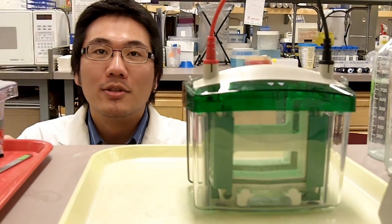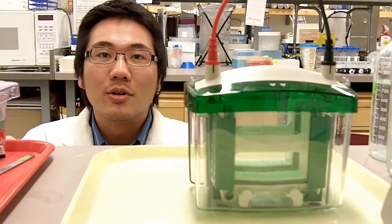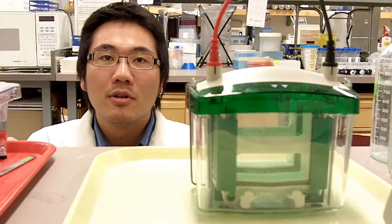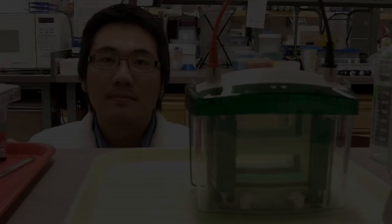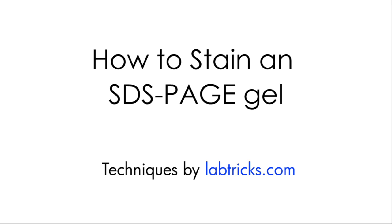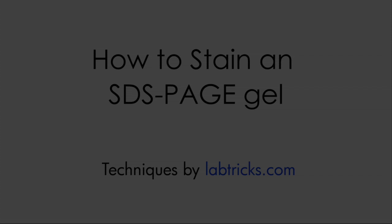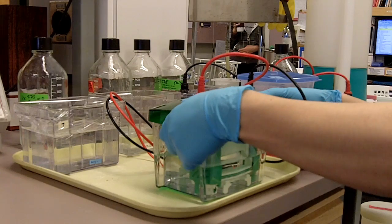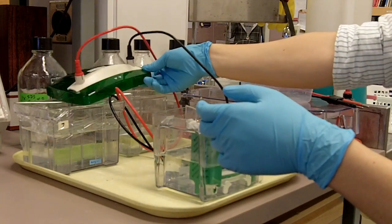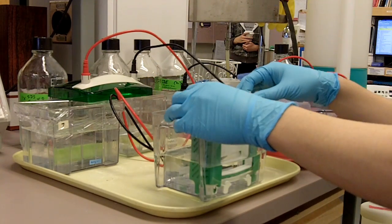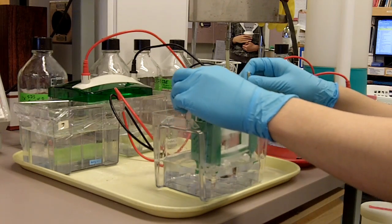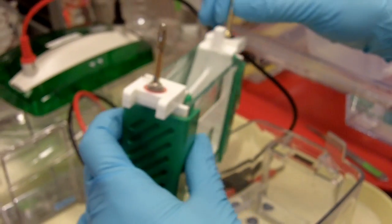So your gel has just finished running, what do you do next? Today I'm going to show you how to disassemble and stain your SDS-PAGE gel using either Page Blue, Coomassie, or silver staining. After you unplug your electrode and remove the lid, take out the inside chamber and carefully pull out the buffer.